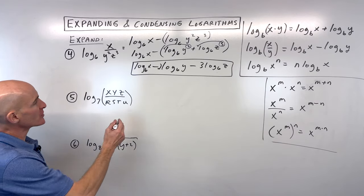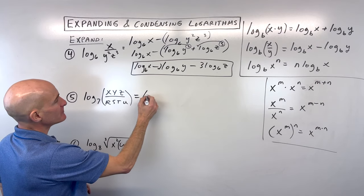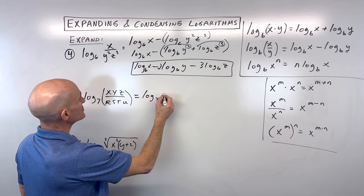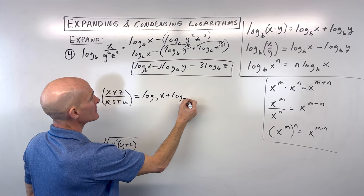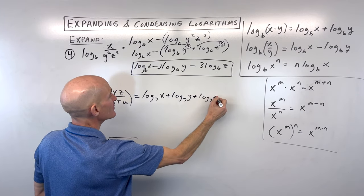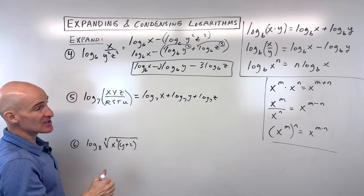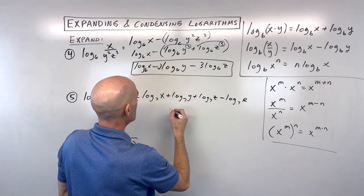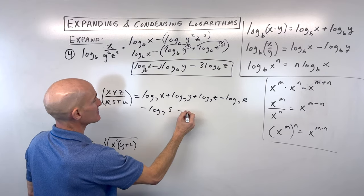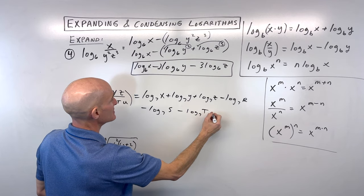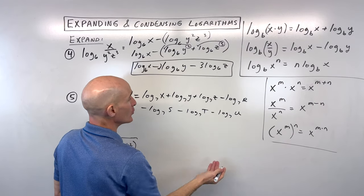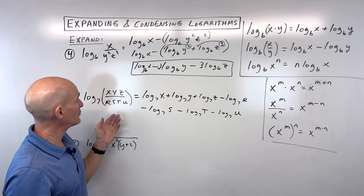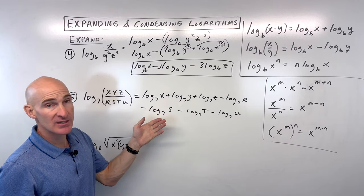Number 5 illustrates this more clearly. Log base 7 with x, y, z in the numerator — those are added: log base 7 of x plus log base 7 of y plus log base 7 of z. And r, s, t, u are in the denominator, so they're subtracted: minus log base 7 of r minus log base 7 of s minus log base 7 of t minus log base 7 of u. Whatever's in the numerator is positive; whatever's in the denominator is negative.